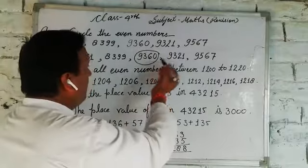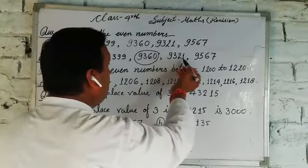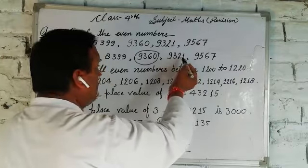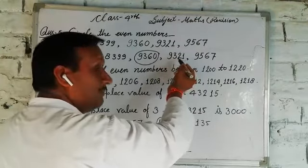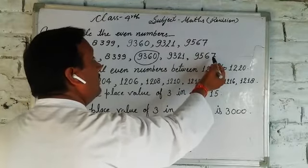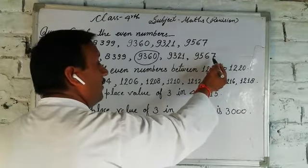After this, the number is 9, 3, 2, 1. If the ones place is odd, this is not an even number. Here the ones place is 7. This is an odd number.